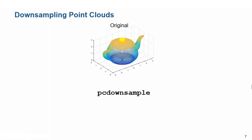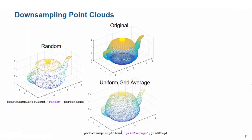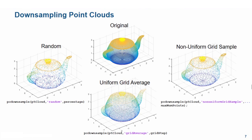Down-sampling can be performed with the pcdownsample function. There are three methods: Random, which preserves only a random percentage of points from the original point cloud. Box grid or grid average, which breaks the data into uniform-sized 3D box grids and merges all points within a box to a single point at the center, preserving the shape better than random. Non-uniform box grid or non-uniform grid sample, which also uses a 3D box grid but tries to create boxes with an equal number of points in each, preserving the relative density of points the best.